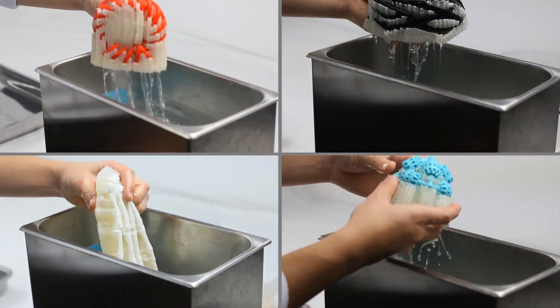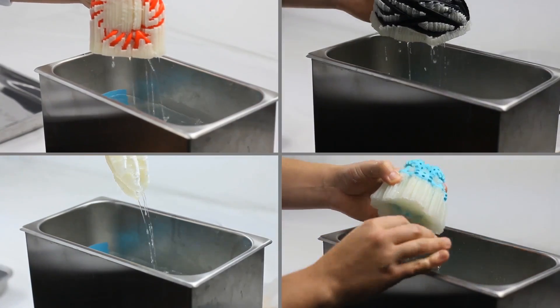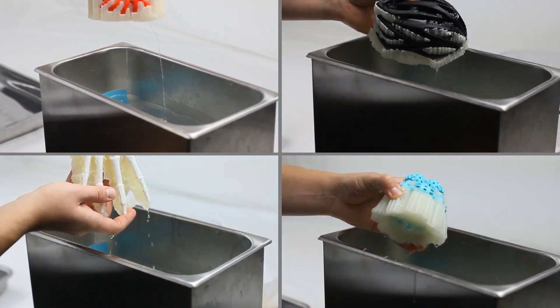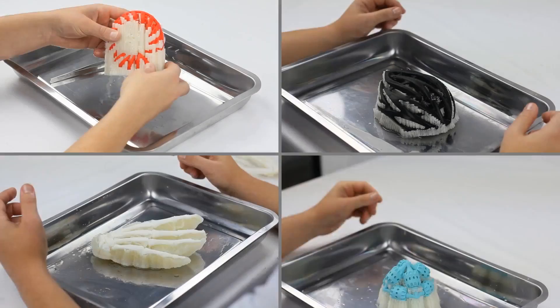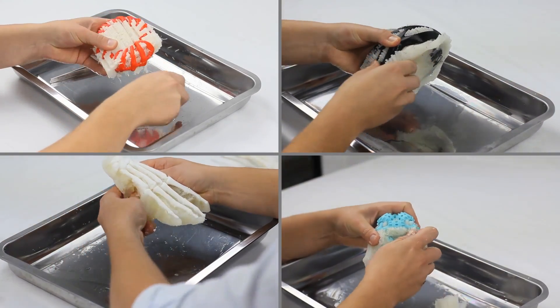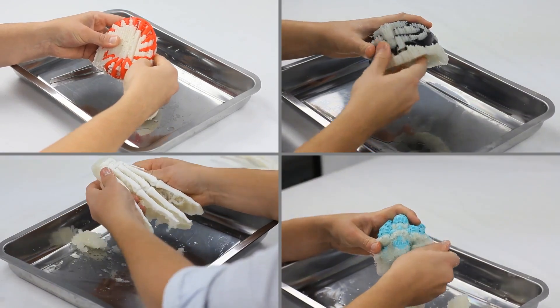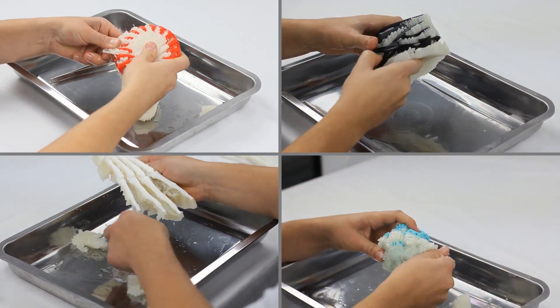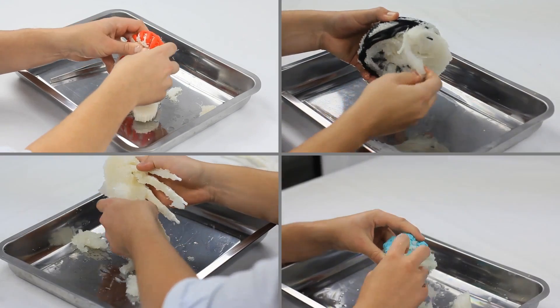After 30 minutes in the alcohol bath the support will have morphed into a swollen gel state. The removal of support is an extremely low intensive process. Easily peel away 95% of the support leaving a remaining 5% to be completely dissolved.